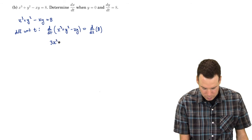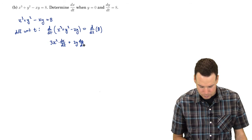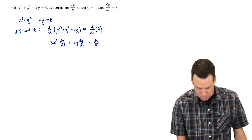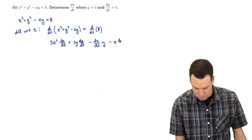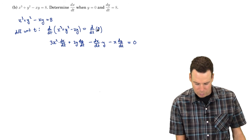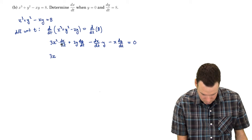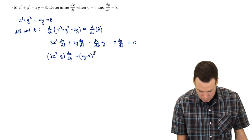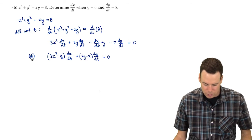Differentiating, we get 3x² · dx/dt — using the chain rule since we're differentiating with respect to t — plus 2y · dy/dt. Then using the product rule on the xy term: minus dx/dt · y plus x · dy/dt, with a negative sign out front, so minus x · dy/dt. That equals zero — the derivative of 8. Grouping the dx/dt terms: (3x² − y) · dx/dt + (2y − x) · dy/dt = 0. Call this equation star.